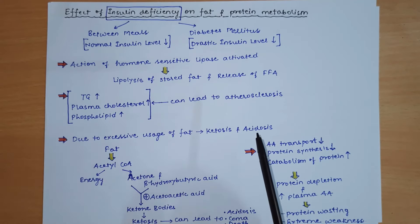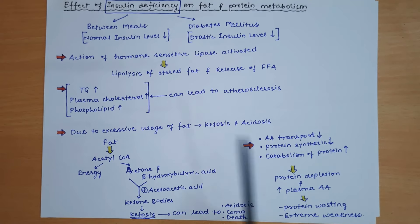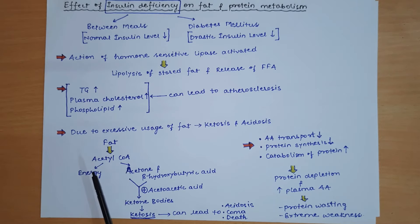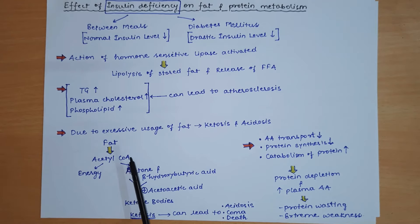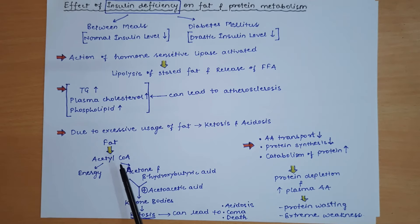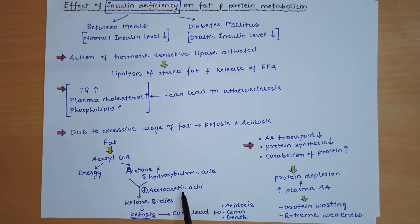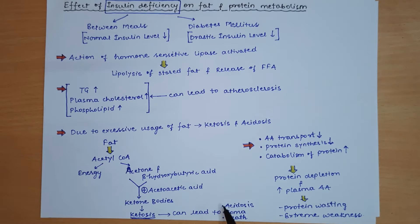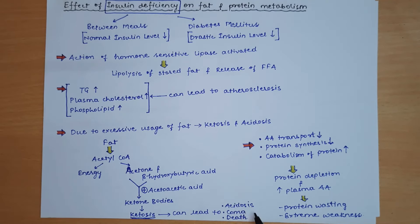Because insulin deficiency leads to less glucose utilization and more lipolysis, fat is used excessively for energy. Fat is converted to acetyl coenzyme A, and some of it forms ketone bodies — acetone and beta-hydroxybutyric acid. The accumulation of ketone bodies leads to ketosis and acidosis; if severe, this progresses to ketoacidosis, coma, and potentially death.